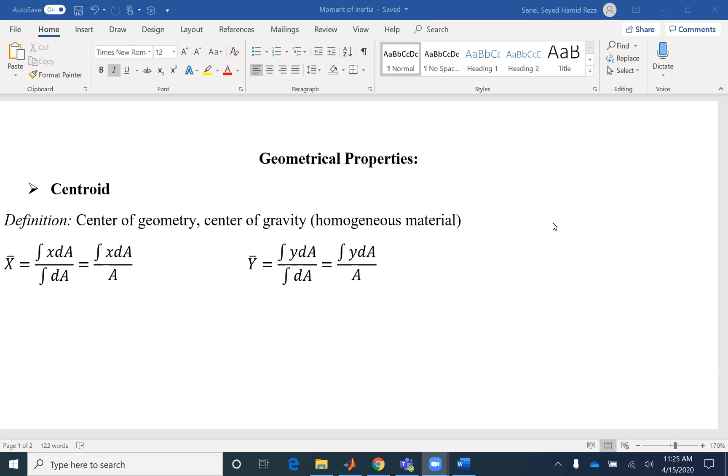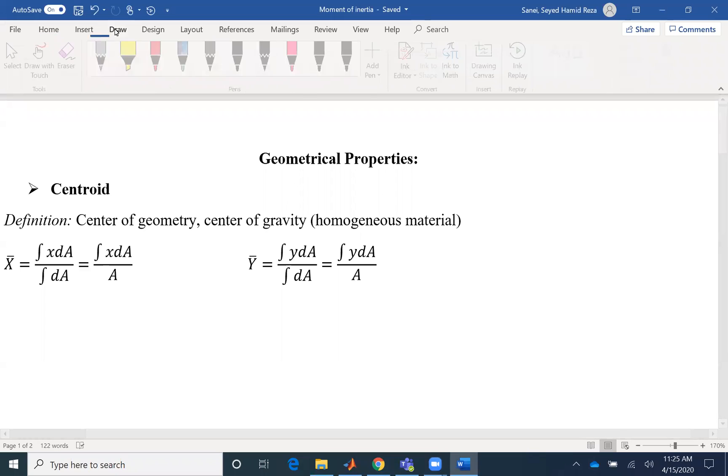So the first one would be the centroid or center of geometry. And center of geometry could be center of gravity as well if our material is homogeneous.